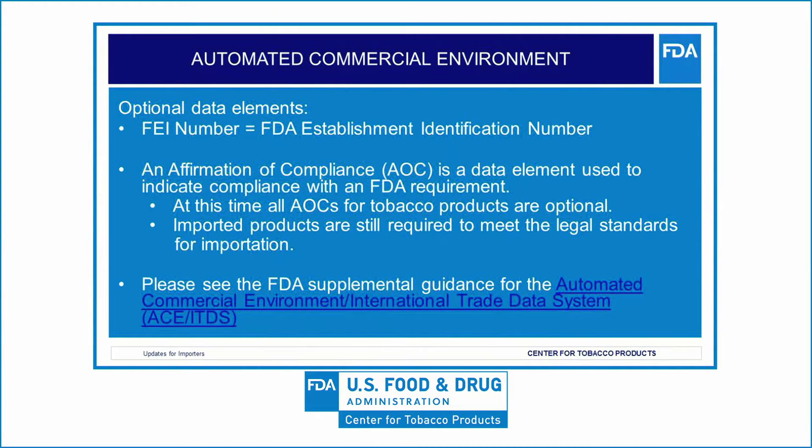We want to focus on two types of optional data elements we frequently are asked about. The first is the FDA Establishment Identification Number, or FEI. This is a unique number issued by FDA to track inspections of the regulated establishment or facility. An FEI is not required to import tobacco products into the United States. However, FDA encourages importers who have an FEI to enter it into ACE.